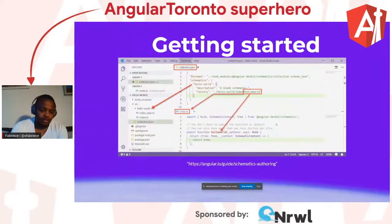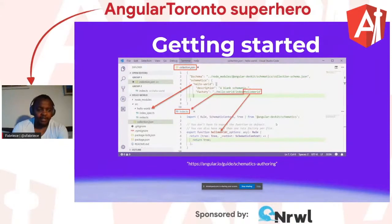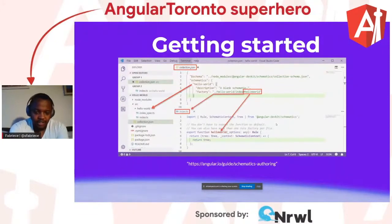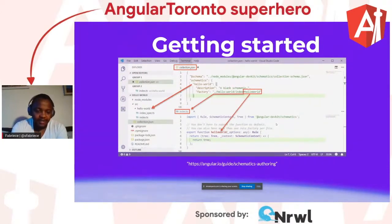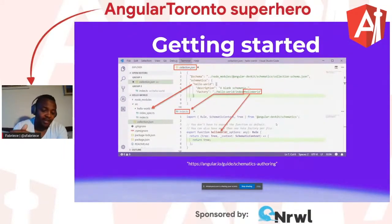When you run that command, this is what's generated — straight from the documentation. A schematic project has a `collection.json` file that's kind of a manifest of all the existing schematics in the project. There's a factory property on Hello World that points to the Hello World function inside the Hello World directory on the index file. You could add more schematics to the project like this. If you dig into the source code of Angular, Angular Components, or NgRx and look at their schematics, you'll find a similar structure — and I highly recommend doing that.